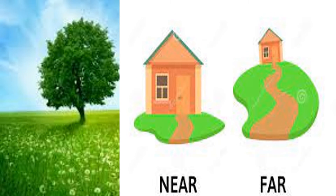You can see there are two houses in this picture — one is big and one is small. The big house is near to the tree and the small house is far from the tree.